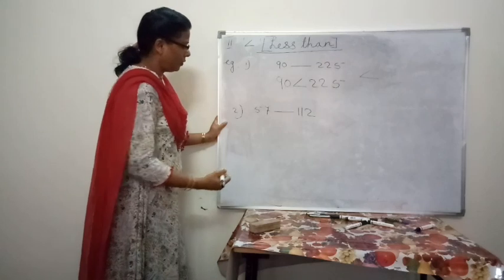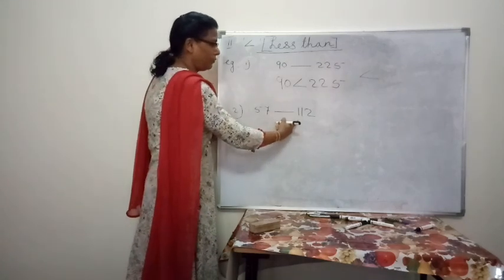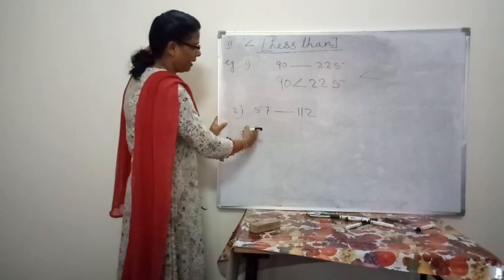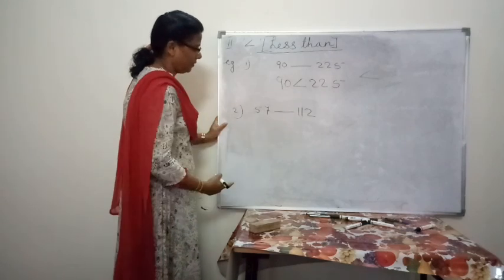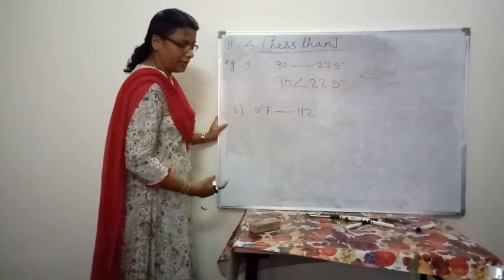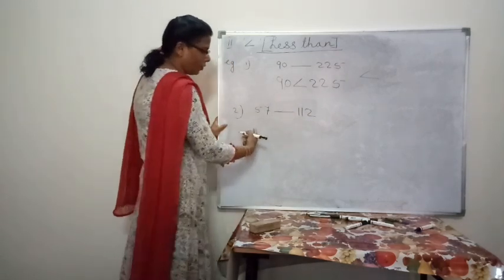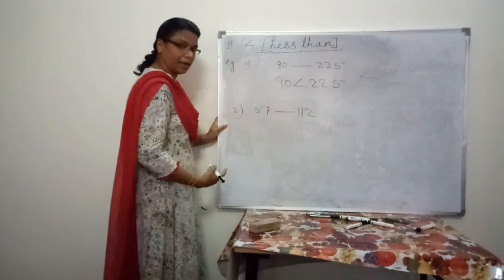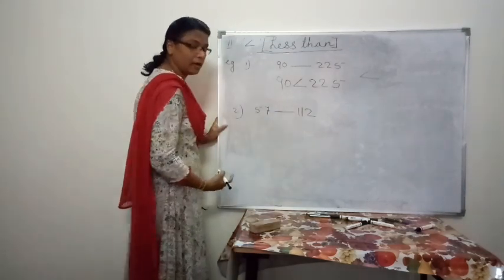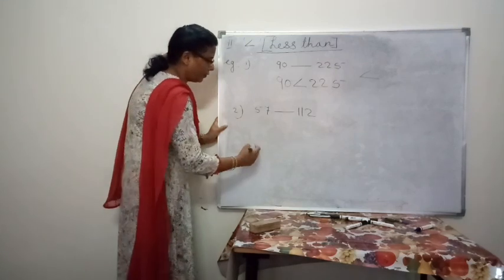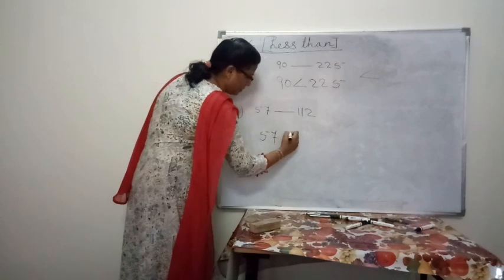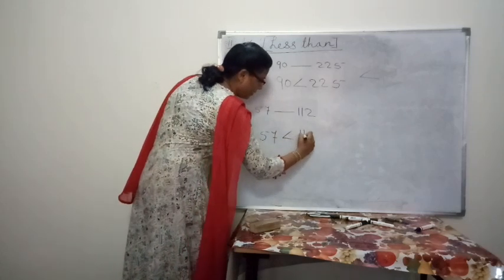Second example: 57 and 112. 57 has 2 digits, whereas 112 has 3 digits. So 57 is the smaller number and 112 is the bigger number. Therefore, we write: 57 is less than 112.